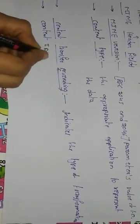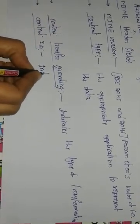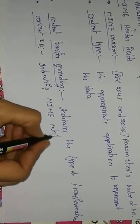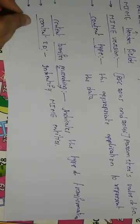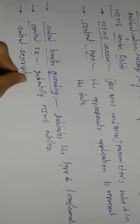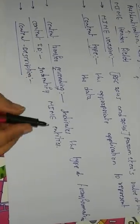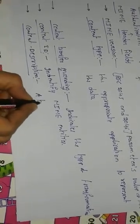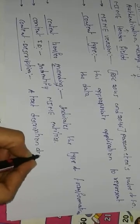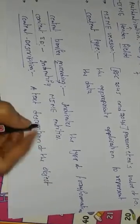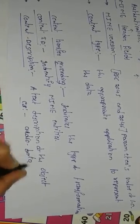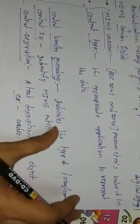Content ID is used to identify the MIME entities. The last field is content description, which provides a text description of the object within the body — for example, audio data. These are the MIME header fields.